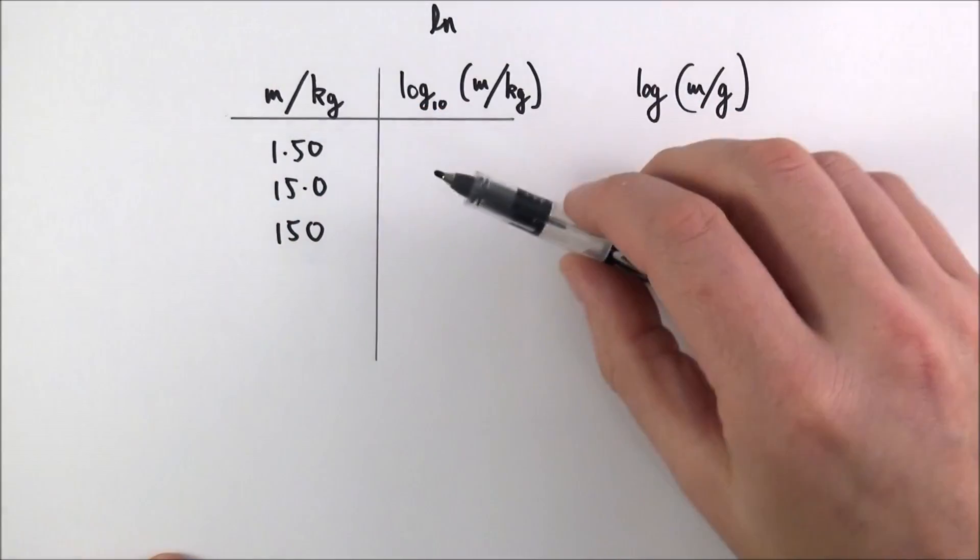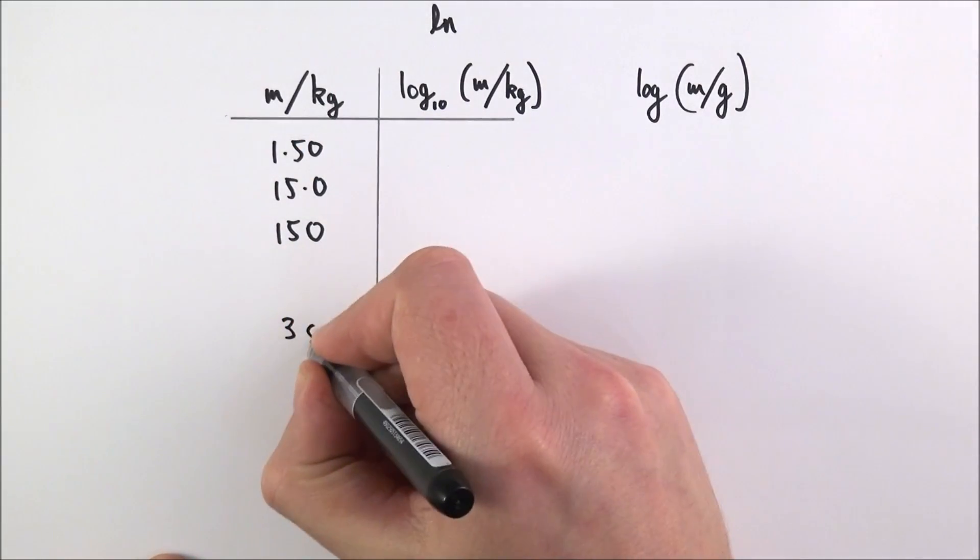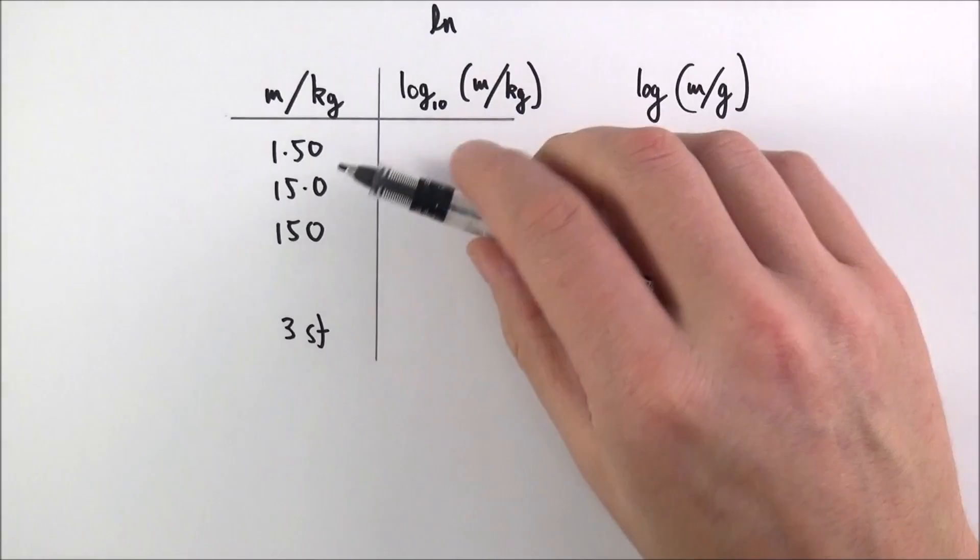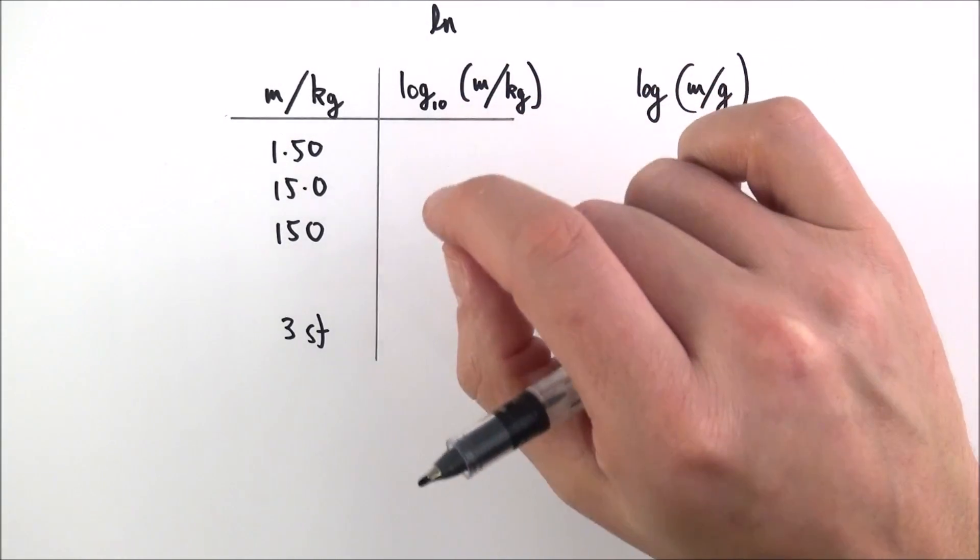When it comes to calculating this, we have some raw data which is to three significant figures. When it comes to putting down your calculated values, it's important that you follow the following rule.